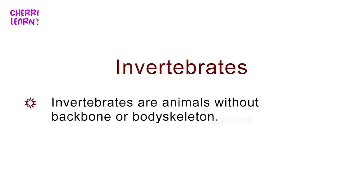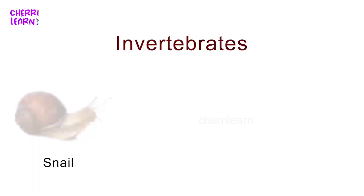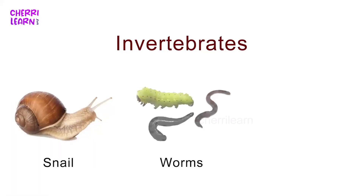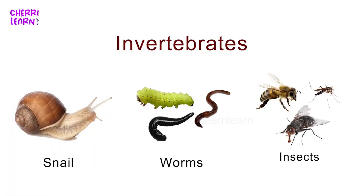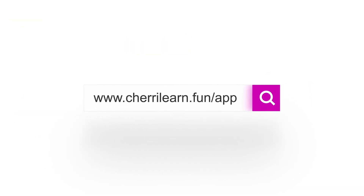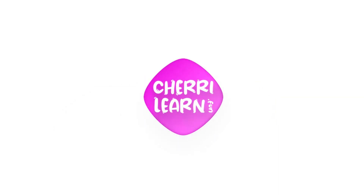Invertebrates are animals without backbone or body skeleton. Examples include Snail, Worms, and Insects.